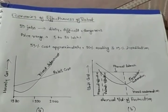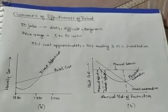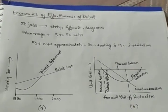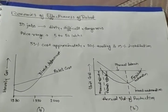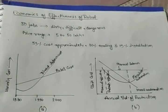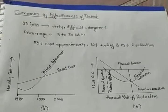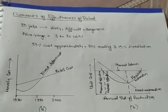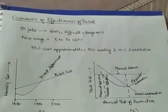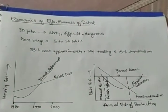Hello friends, today we discuss economics of effectiveness of robots. Actually, robots are used for 3D jobs, where 3D jobs means very dirty, very dangerous, and very difficult. The price range of robots economically contain 5 lakh to 50 lakh. The robots, if they cannot be justified economically, they will not be purchased.